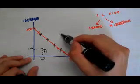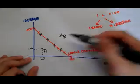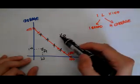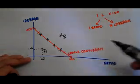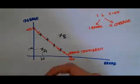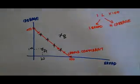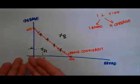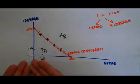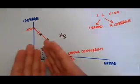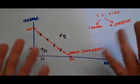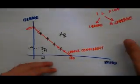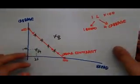However, if I were at point B outside the line, I am in la-la land because I am dreaming — it is impossible to reach this point because I do not have enough resources. The nearer we are to the origin, the lesser we have; the further we are out, the more we have.